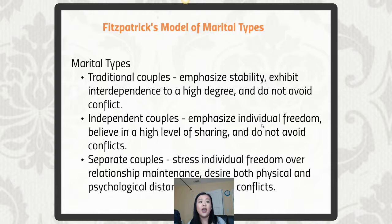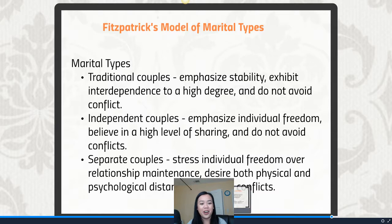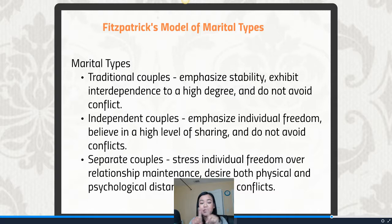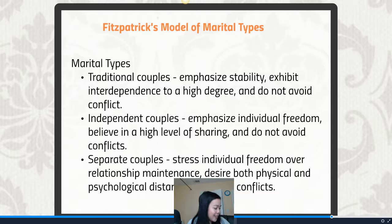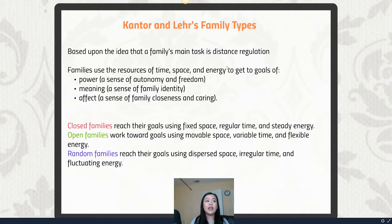If you're married or your parents are married, it's interesting to see which type you or they fall into — and also whether both spouses would agree on the type. Fitzpatrick found that sometimes she couldn't categorize a couple because the two spouses disagreed on what type of couple they were. About 40% of people fell into a mixed category. It's always interesting to consider that people might perceive their own relationship differently from one another — and Fitzpatrick's model demonstrates that we often do.